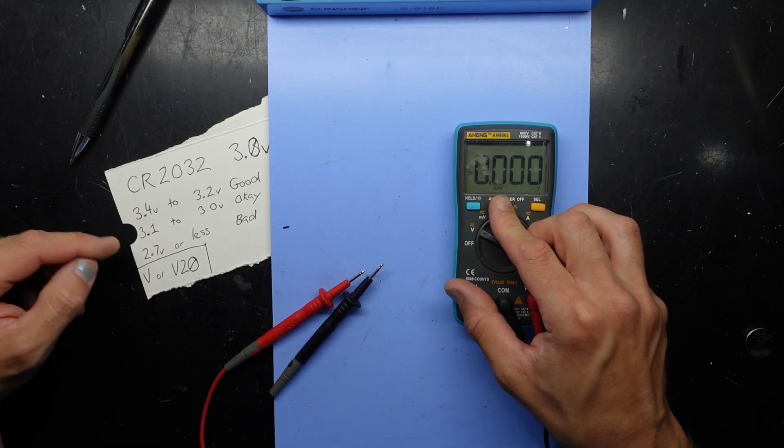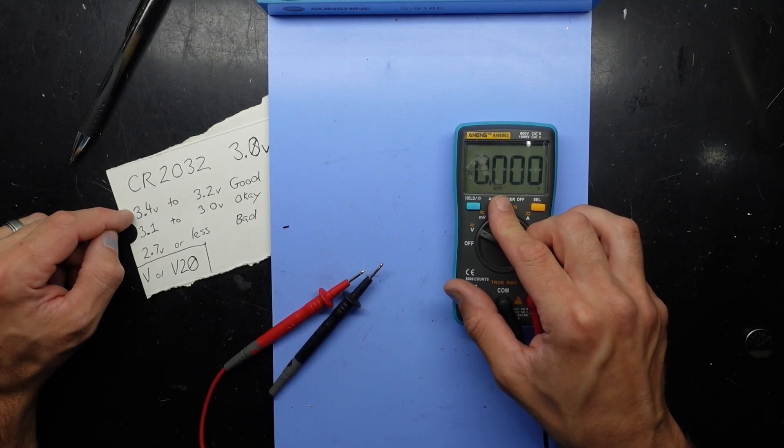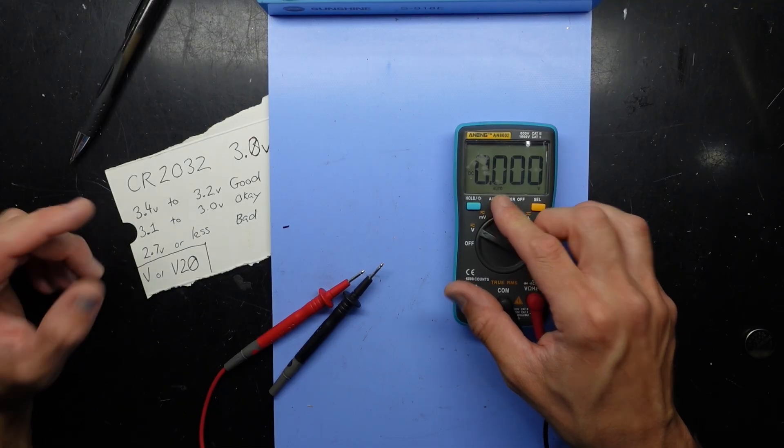We want to be above 2.7 volt, basically above 2.7. If we're above 3.4 we're going really well.